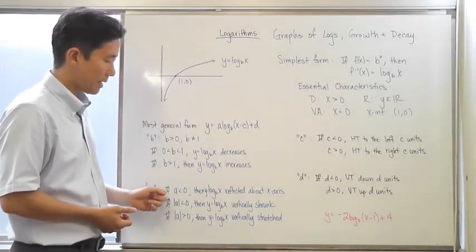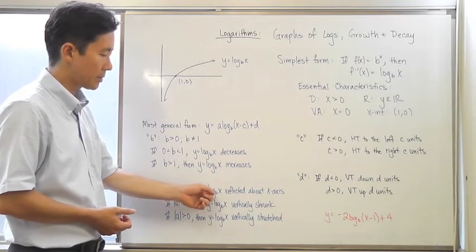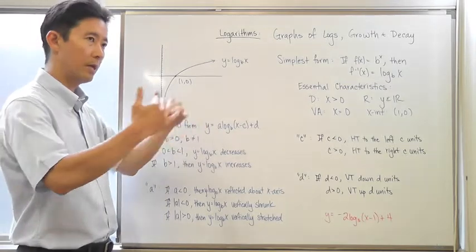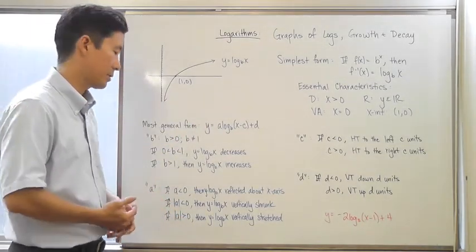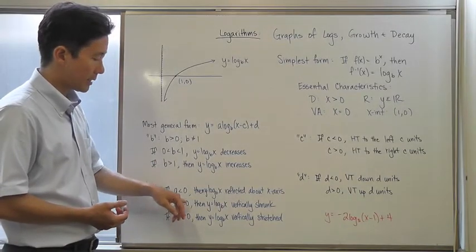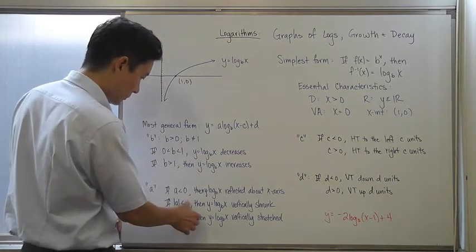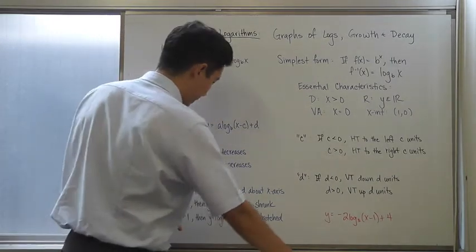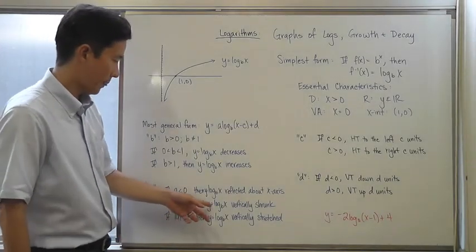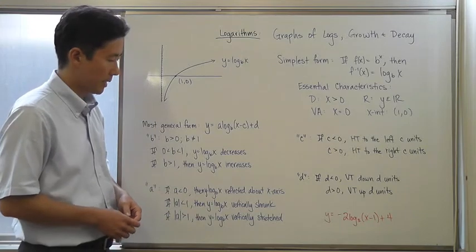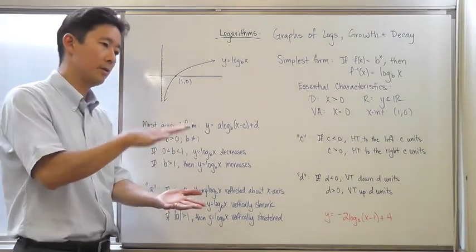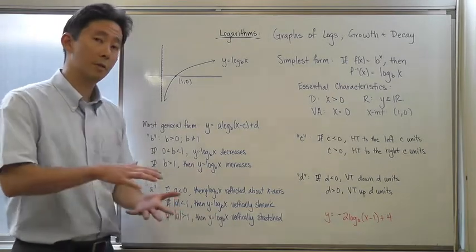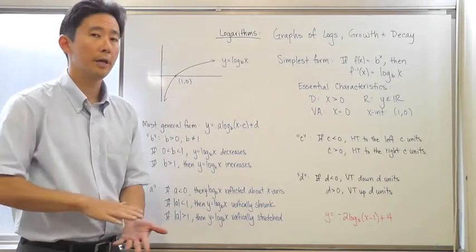Looking at parameter a: if a is less than 0, then y equals log base b of x is going to be reflected about the x-axis, because the y value is going to be negative if it was originally positive, and positive if it was originally negative. If the absolute value of a is less than 1, then y equals log base b of x is going to be vertically shrunk — in other words, it's going to get closer to the x-axis. If the absolute value of a is greater than 1, then y equals log base b of x is going to be vertically stretched — the values are actually going to be further away from the x-axis.